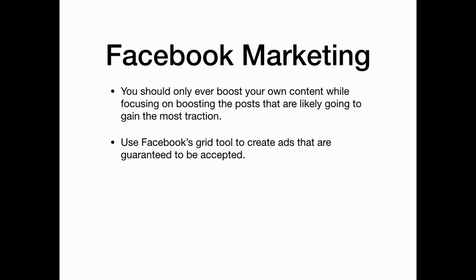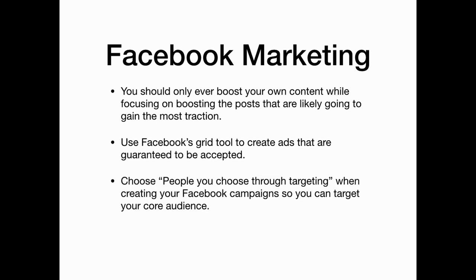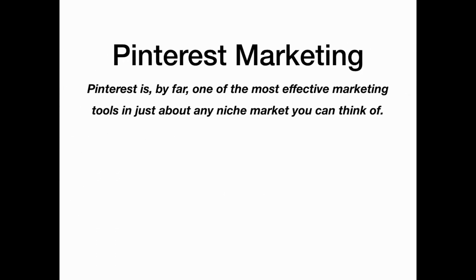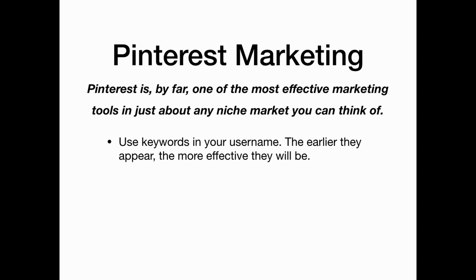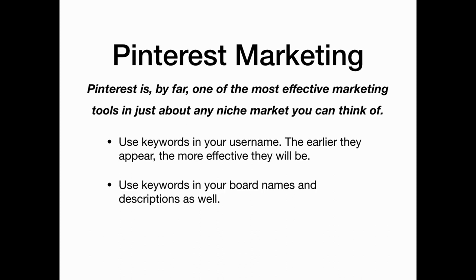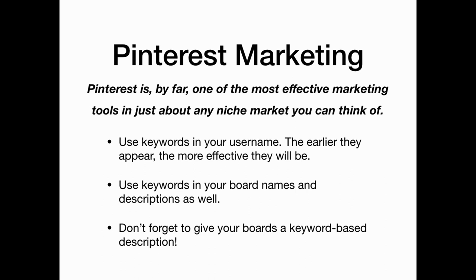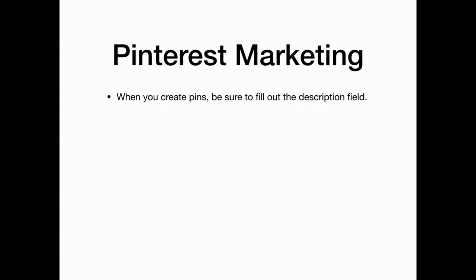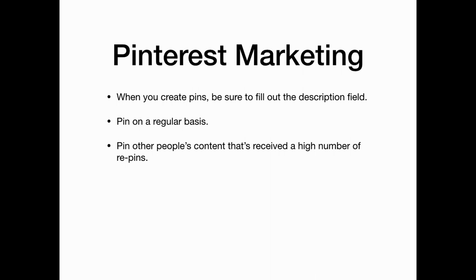When setting up your ad campaigns, choose targeting so that you can target your core audience. Pinterest is by far one of the most effective marketing tools in just about any affiliate niche market. Here are a few tips: use keywords in your username — the earlier they appear, the more effective they will be. Also use keywords in your board names and descriptions, and give your boards a keyword-based description. When you create pins, be sure to fill out the description field, then pin on a regular basis. Also pin other people's content that has received a high number of repins.